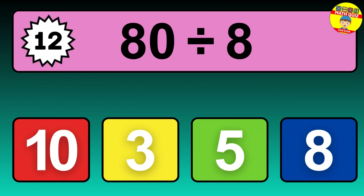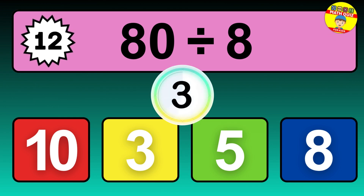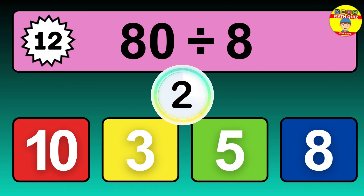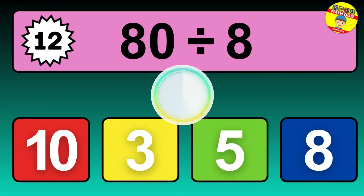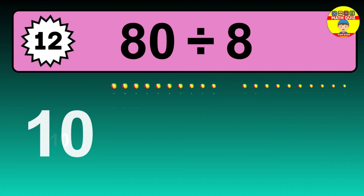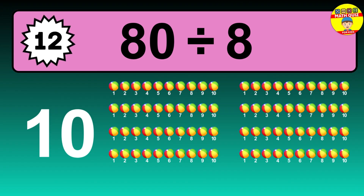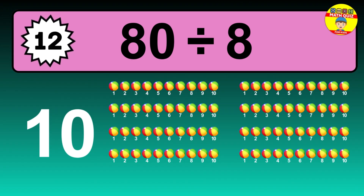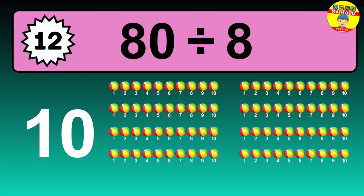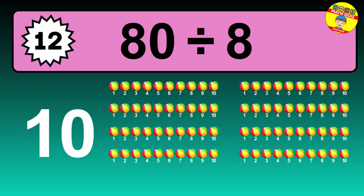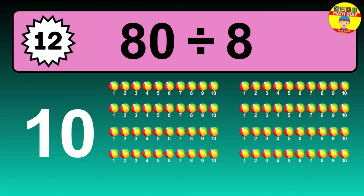What is 80 divided by 8? Picture this — you have 80 objects to divide into groups of 8. How many groups can you make? Let's think about it. Ready to find out? Let's break it down. Let's imagine you have 80 objects. Can you picture them lined up?